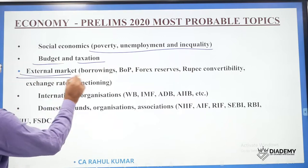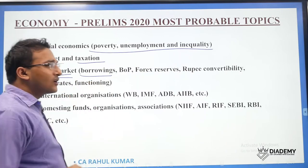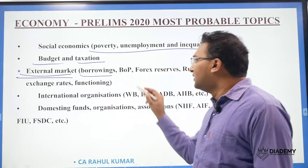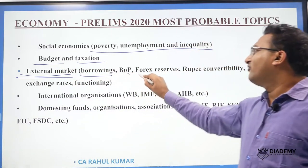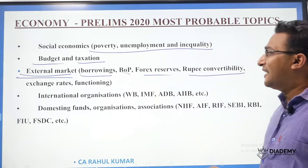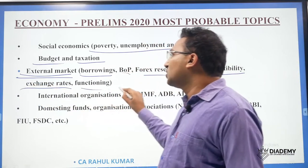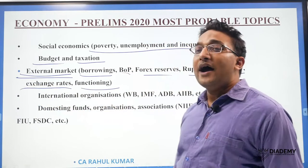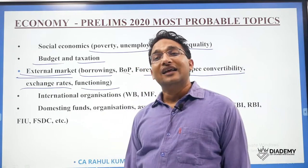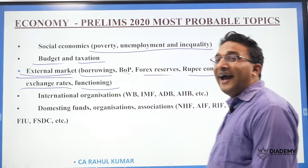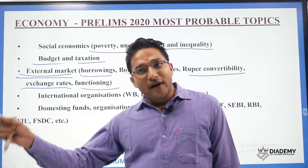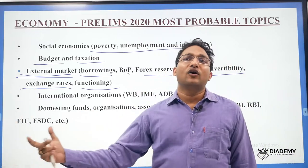For the external market, go through the trends of borrowing — what is the composition of domestic borrowing and external borrowing, balance of payments, forex reserves, rupee convertibility, exchange rates, and the functioning of the exchange rate. Also know the trade of the rupee in the last one and a half years.